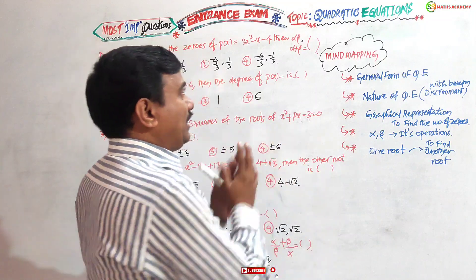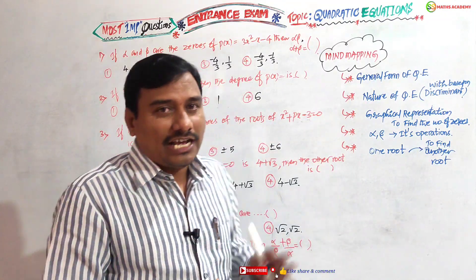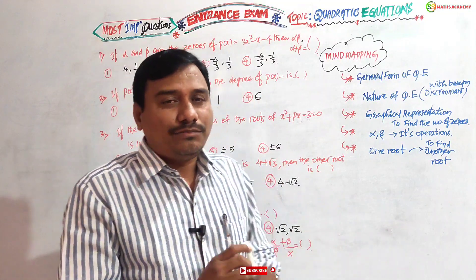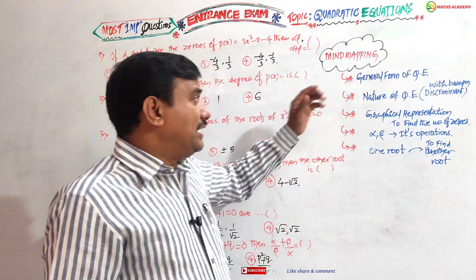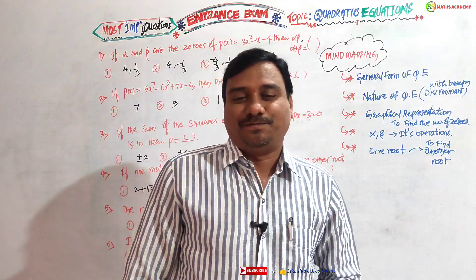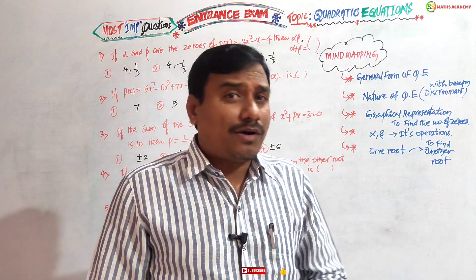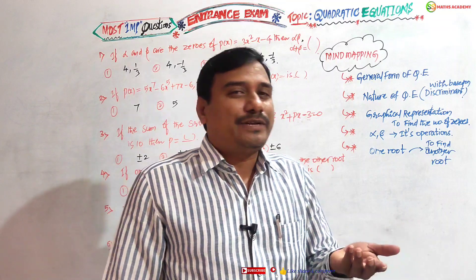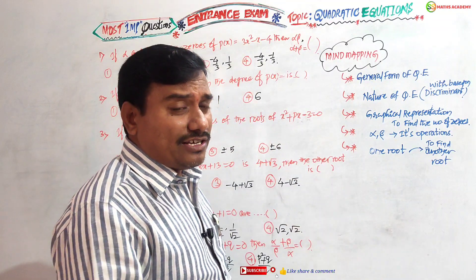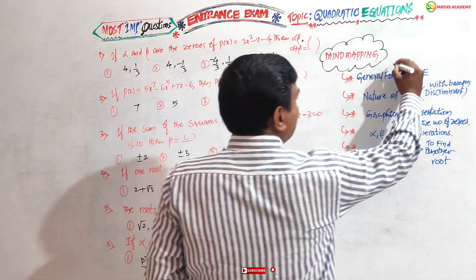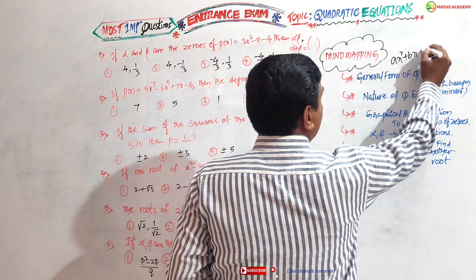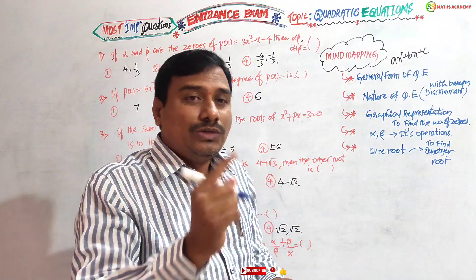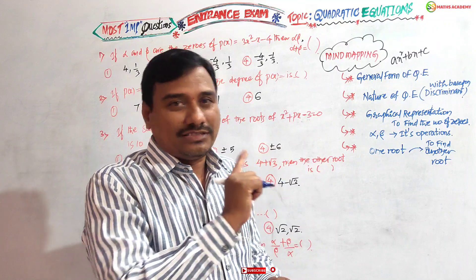Now let us go with quadratic equations. I have done some mind mapping points based on the competitive exam, based on the coming exam. In the general form of a quadratic equation — AX squared plus BX plus C — if an equation has degree 2, then it is called a quadratic equation by definition.